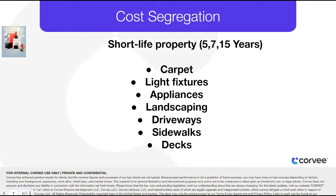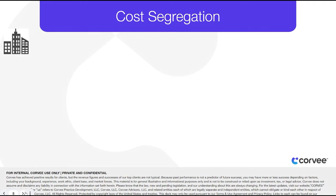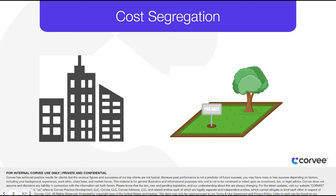These shorter asset classes can use accelerated depreciation and may also qualify for treatment under bonus depreciation and Section 179. Compared to straight-line depreciation at 27.5 or 39 years on the building, a cost segregation study can create significant tax savings in the earlier years of ownership.